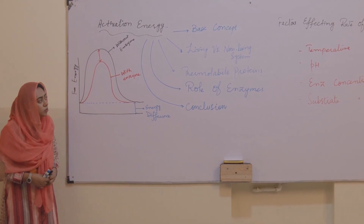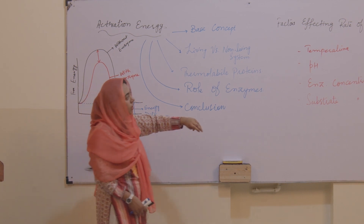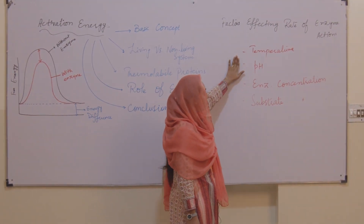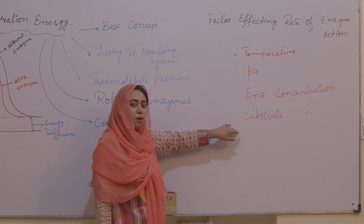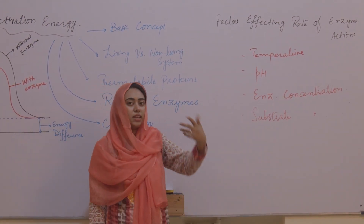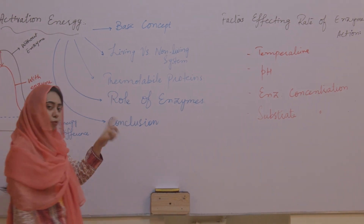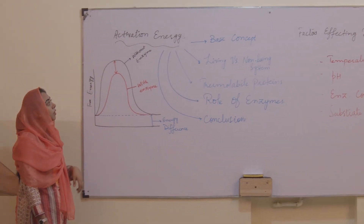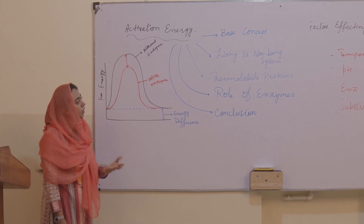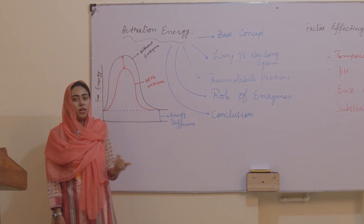Looking at the board, I have mentioned these factors: temperature, pH, enzyme concentration, and substrate concentration. These are 4 factors which directly affect the enzyme rate of reaction. But before going towards that, we will see what activation energy actually is — what is the basic concept, and what is the role of enzymes.